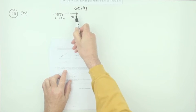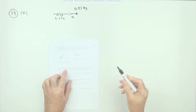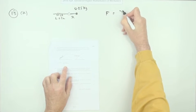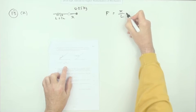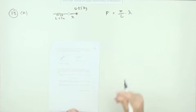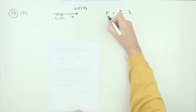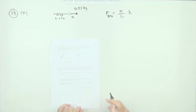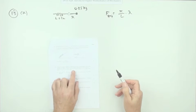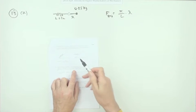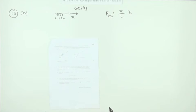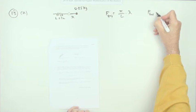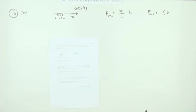The only force acting on it is the restoring force of the spring. That restoring force equals the extension x over the original length multiplied by the modulus — lambda. However, the mass must be resting on a surface, so there's also a frictional force which opposes the motion and is velocity dependent: a force of friction equal to 6v.